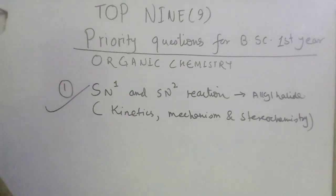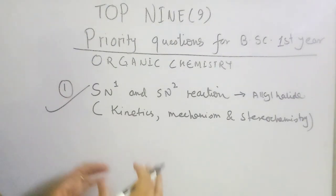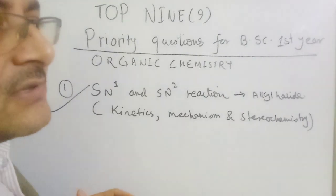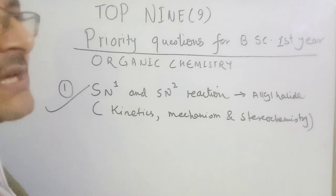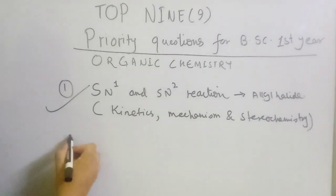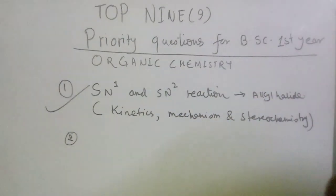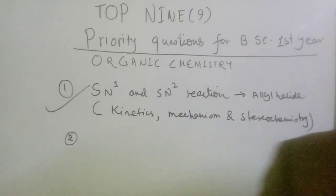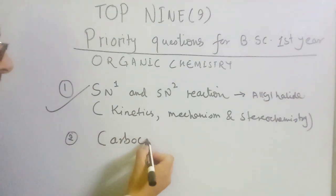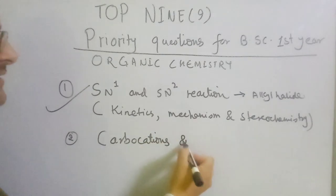We will take a video to explain the SN1 and SN2 reaction in detail. Now, moving to the number 2 priority question: carbocations and their relative stabilities. What are carbocations? We need to understand carbocations and rank them by their relative stability.